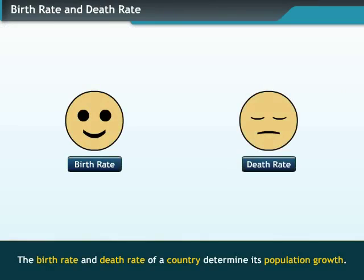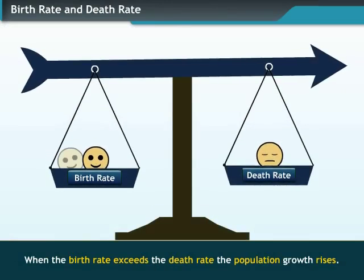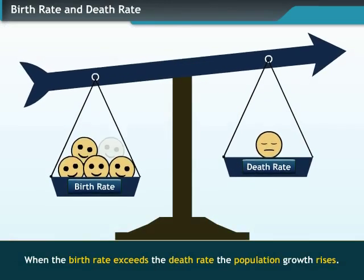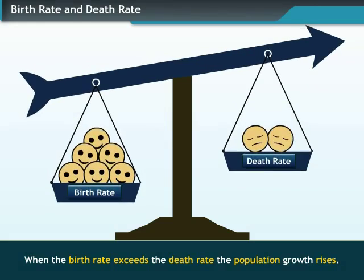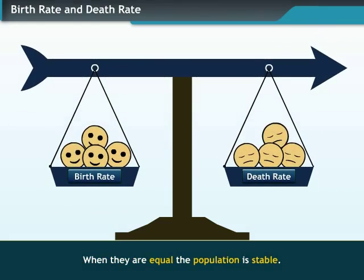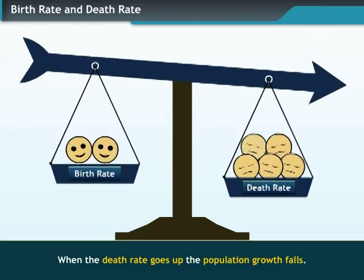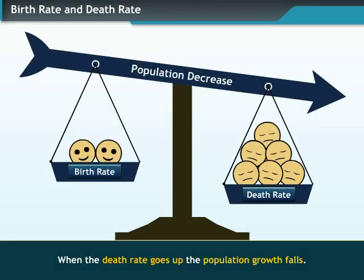The birth rate and death rate of a country determine its population growth. When the birth rate exceeds the death rate, population growth rises. When they are equal, the population is stable. When the death rate goes up, the population growth falls.